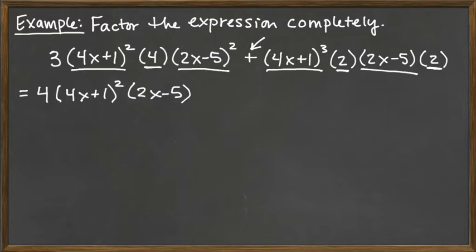So altogether, that's our greatest common factor: 4 times 4x plus 1 raised to the second power times 2x minus 5. If we pull out all of that as our greatest common factor, what we have to do next is figure out what's left over.